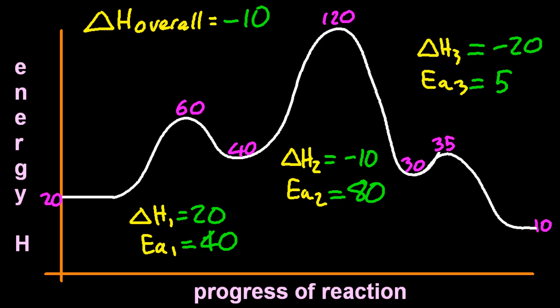Overall, well, I could sum my three delta H's and get the delta H overall. Or I could look at the very left-most reactants and the very right-most products. It gives me minus 10 for delta H. And all this business with adding the different delta H's to get the final delta H is actually Hess's law. The rate determining step is the middle one, has the highest activation energy.